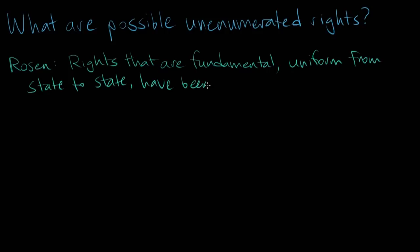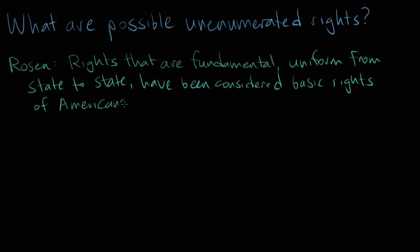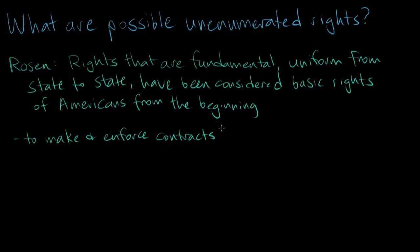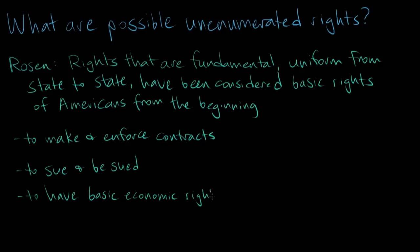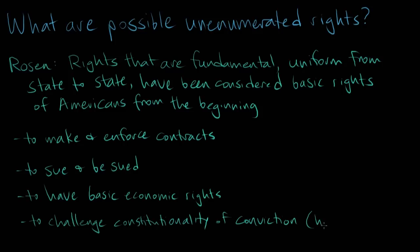Some of these rights include the right to make and enforce contracts, to sue and be sued, to have basic economic rights, and also to have the benefit of the writ of habeas corpus — which is in the original Constitution — and that's the right to challenge the constitutionality of your conviction. So those are just some examples of the unenumerated economic rights that the framers of the 14th Amendment considered to be protected by the 14th Amendment, and by implication by the Ninth Amendment too, because they are natural rights — the basic rights of acquiring and possessing property and obtaining happiness and safety.